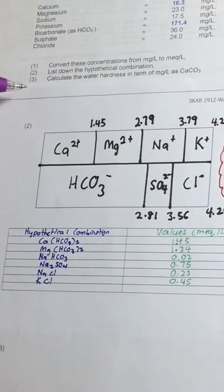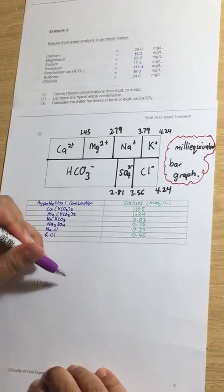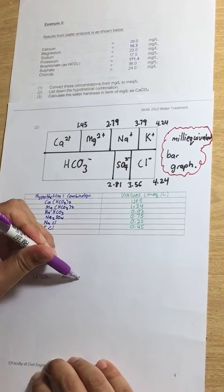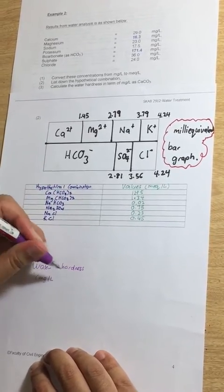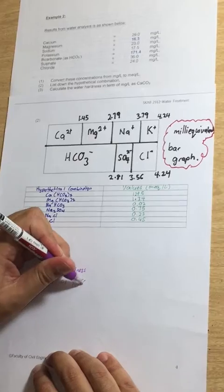So water hardness - write it down. In milligrams per liter as calcium carbonate.